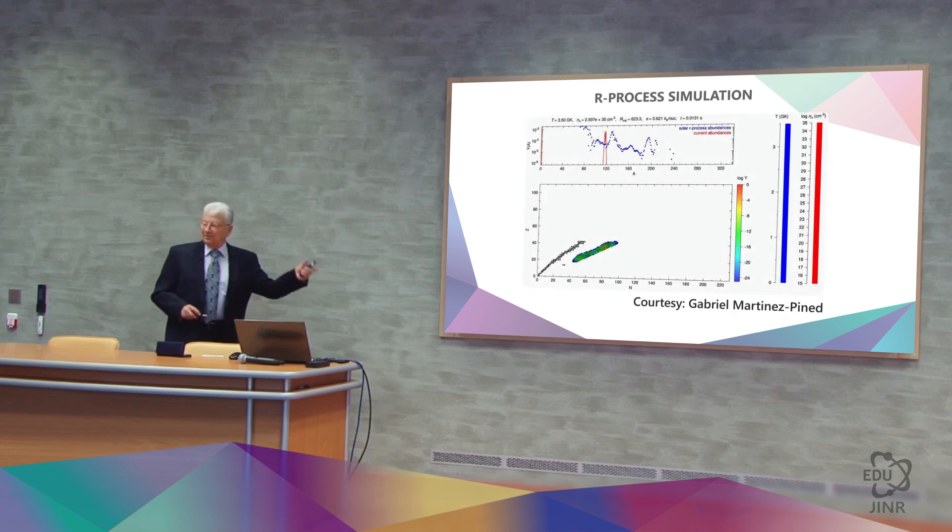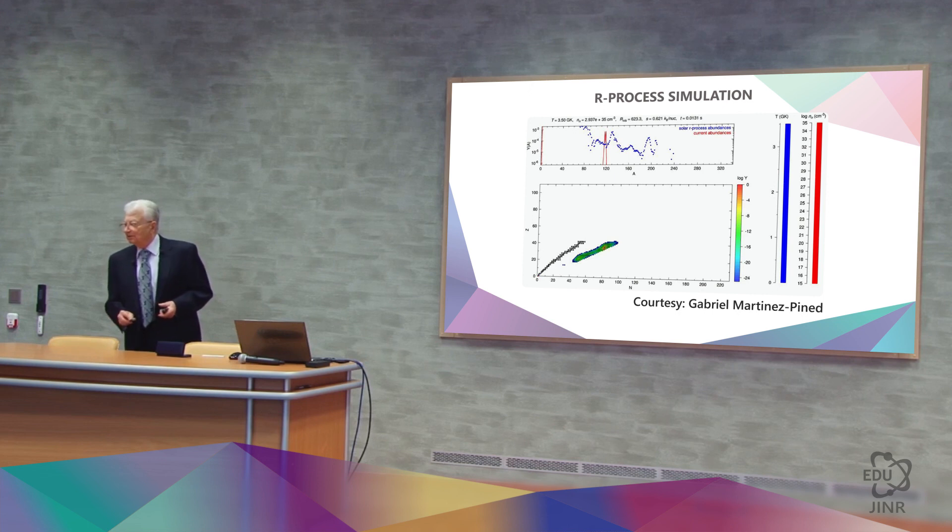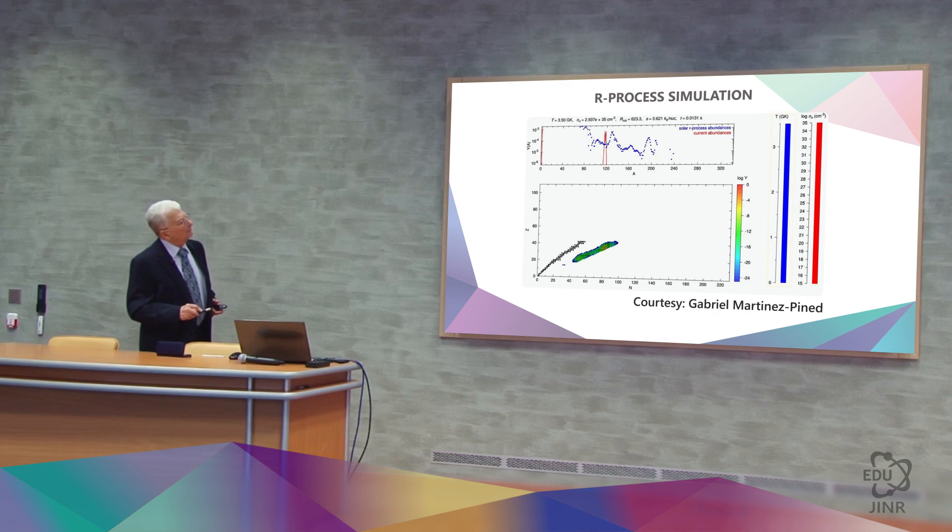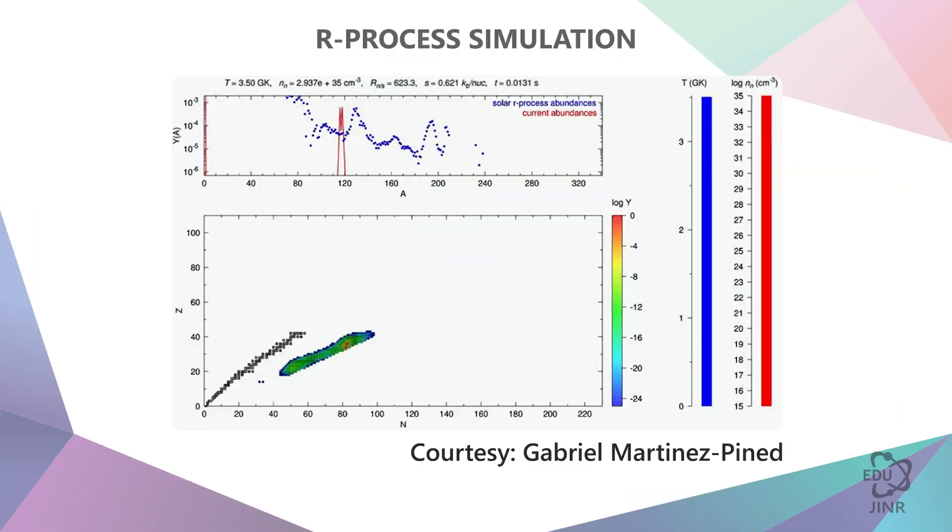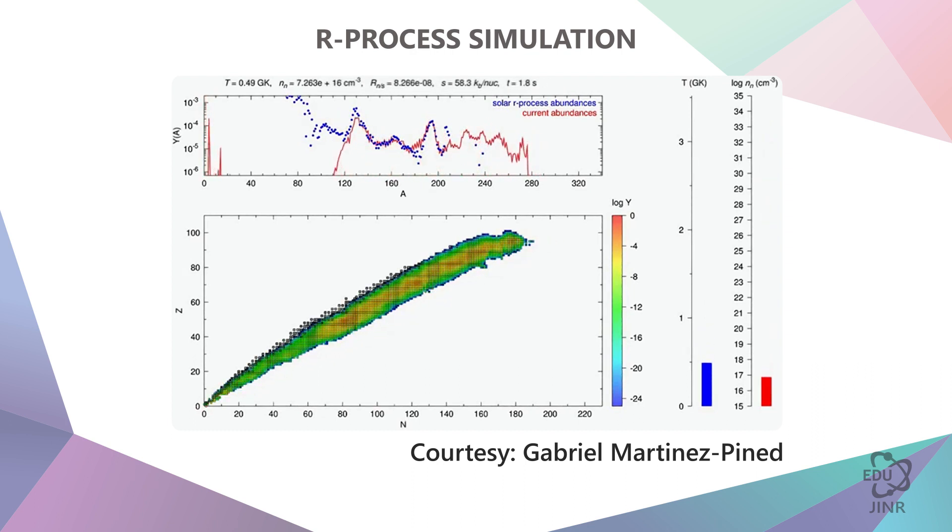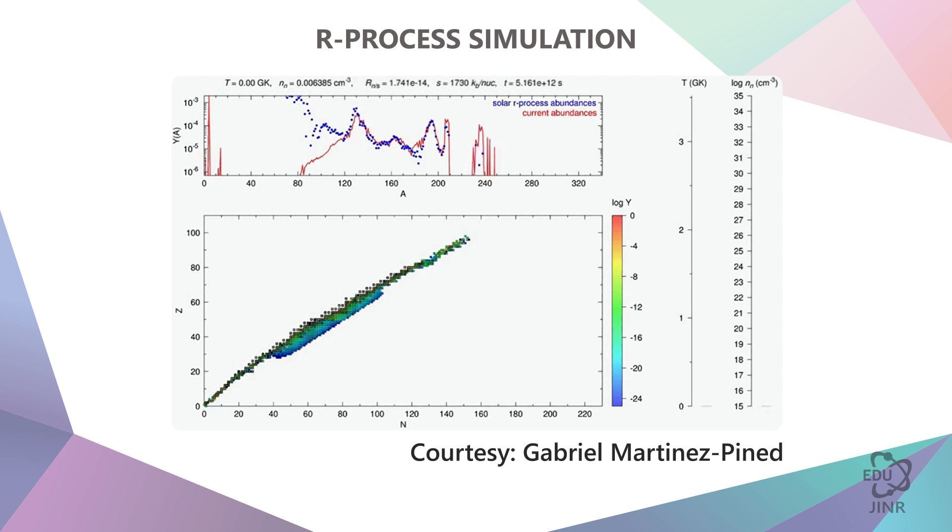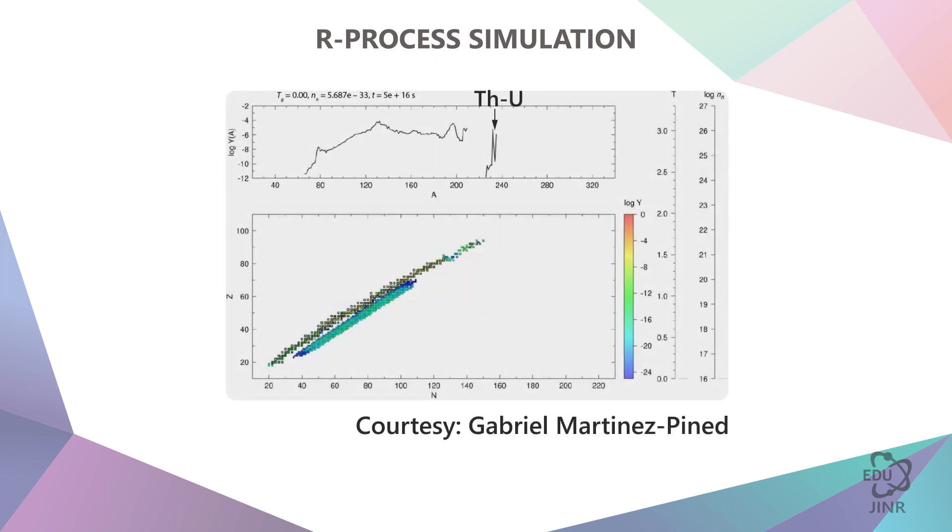I would like to show you what a supernova explosion looks like. Just pay attention to these two scales. One scale will be temperature, and the other will be, if I am not mistaken, a neutron flux. When the gaseous iron was compressed to a high density, the process began. Then it ended, the temperature drops and decays take place. As a result, all processes ended. This is uranium and thorium.